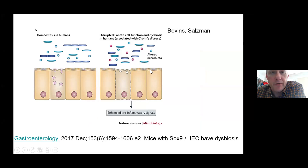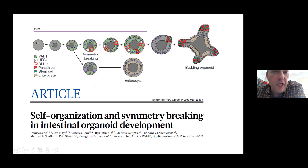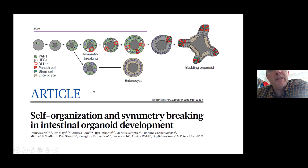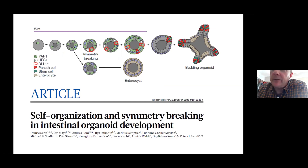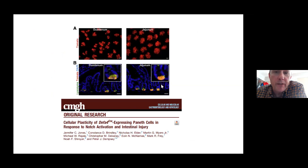Paneth cells secrete antimicrobial proteins and peptides into the lumen. We thought malfunctional Paneth cells would produce less of these, which we did see in animal models. This would alter the local ecology — specific microbes able to withstand higher concentrations of these molecules survive near the intestinal surface, whereas others can't, so when Paneth cells don't function properly you get local dysbiosis at the interface. Paneth cells are also important as a niche at the crypt base in the small intestine, interacting directly with intestinal stem and progenitor cells via Notch and YAP signaling pathways, and also playing a role during injury.